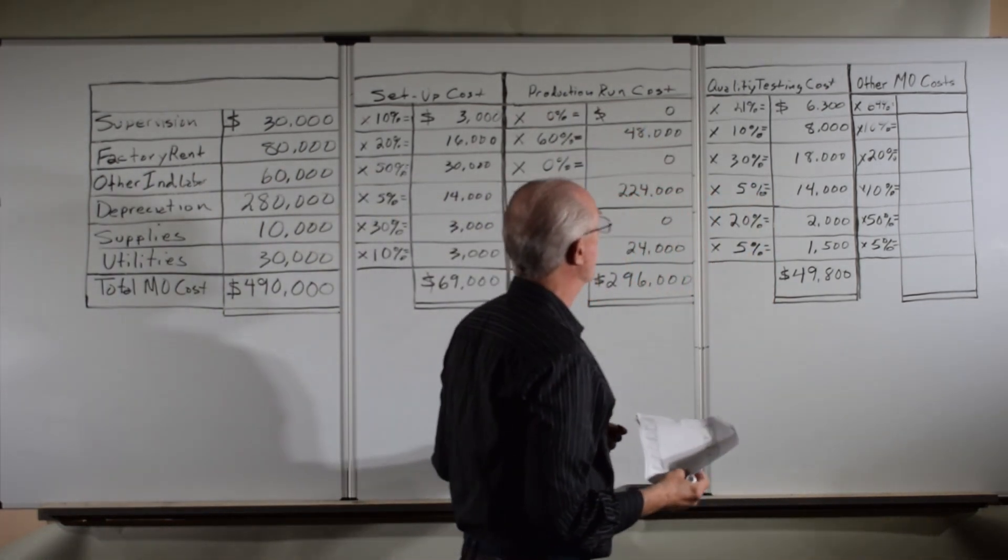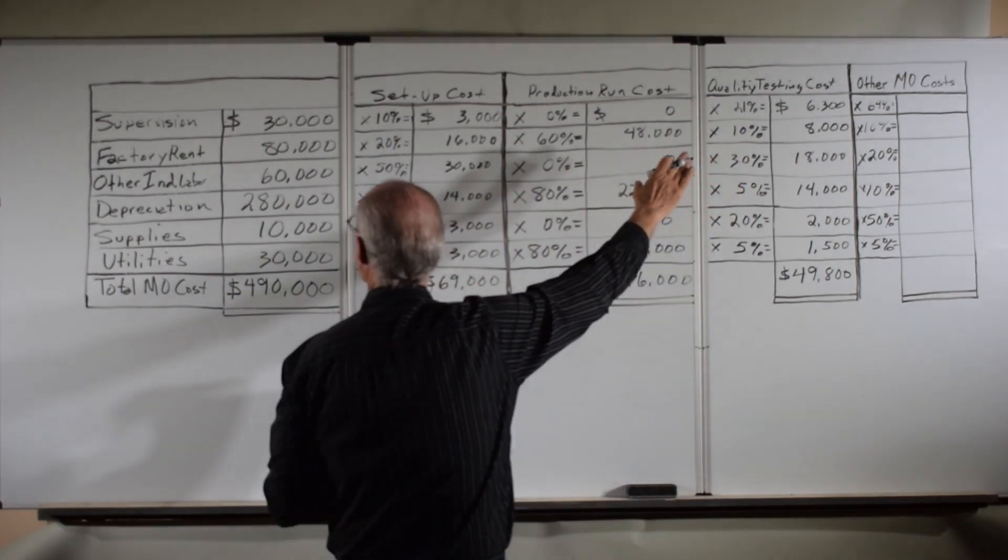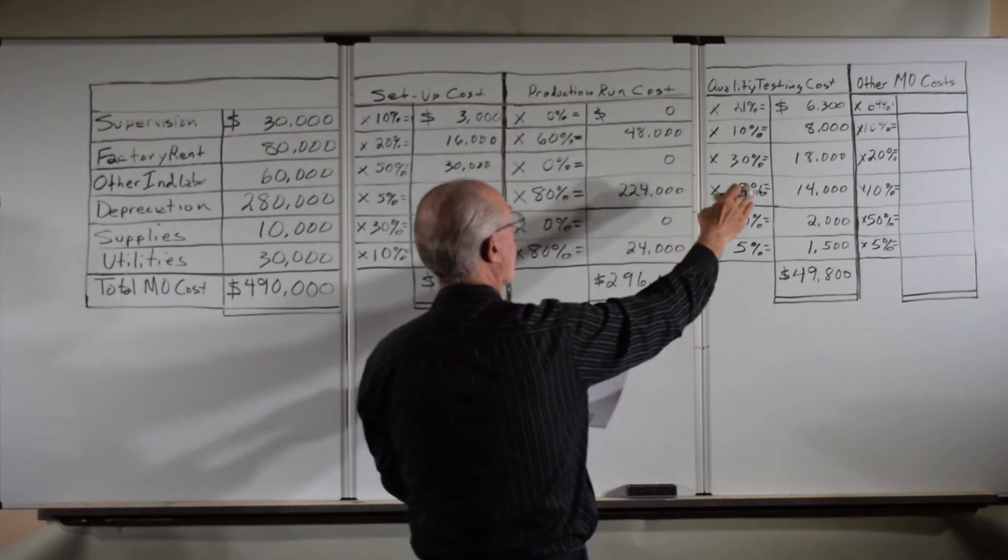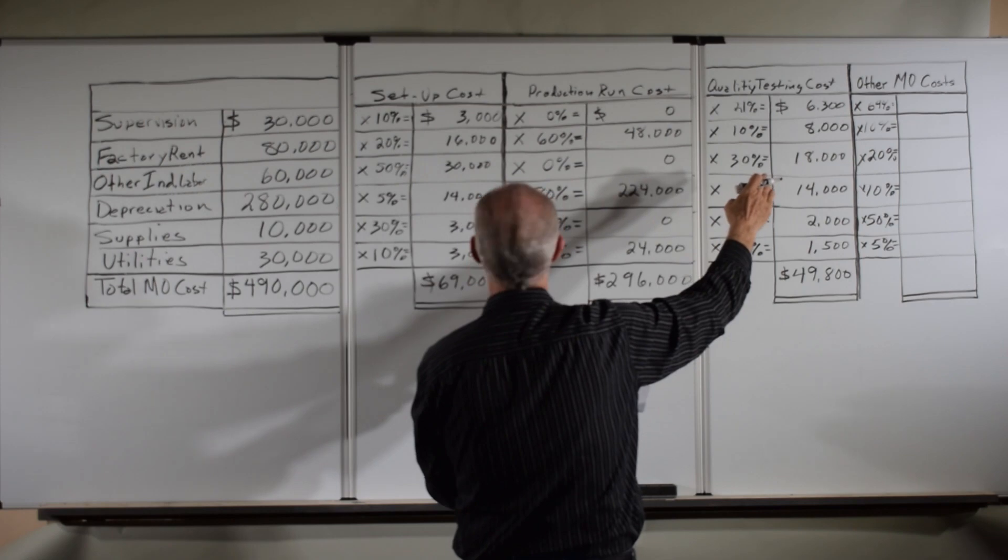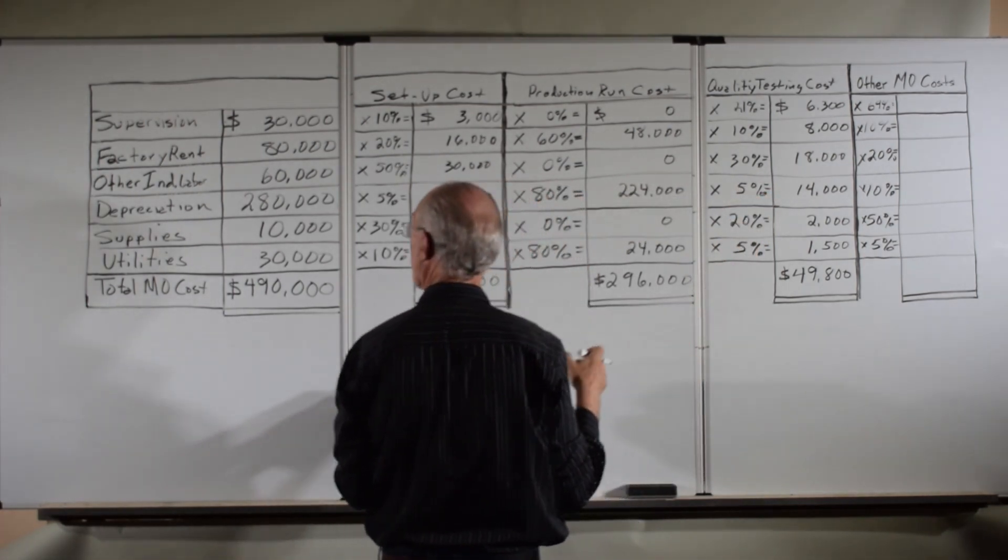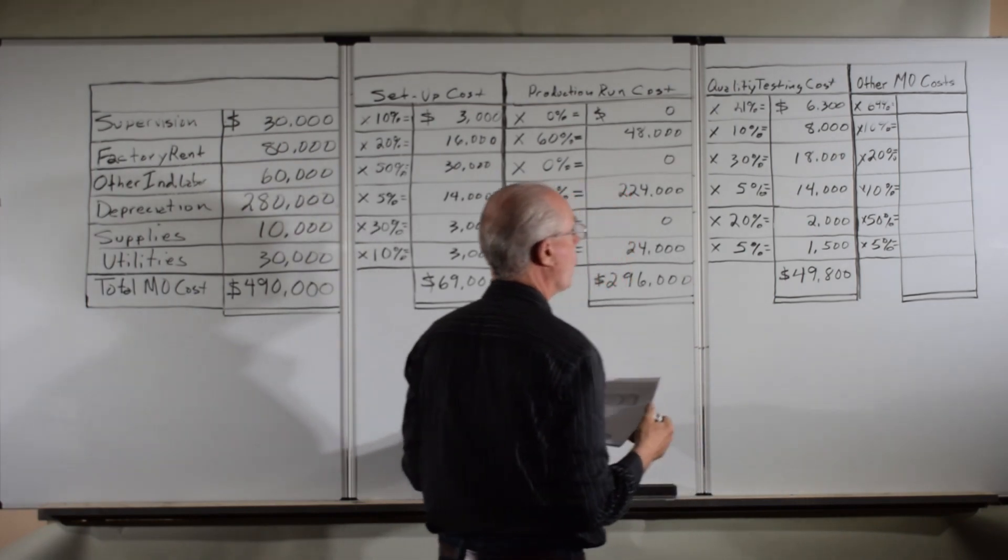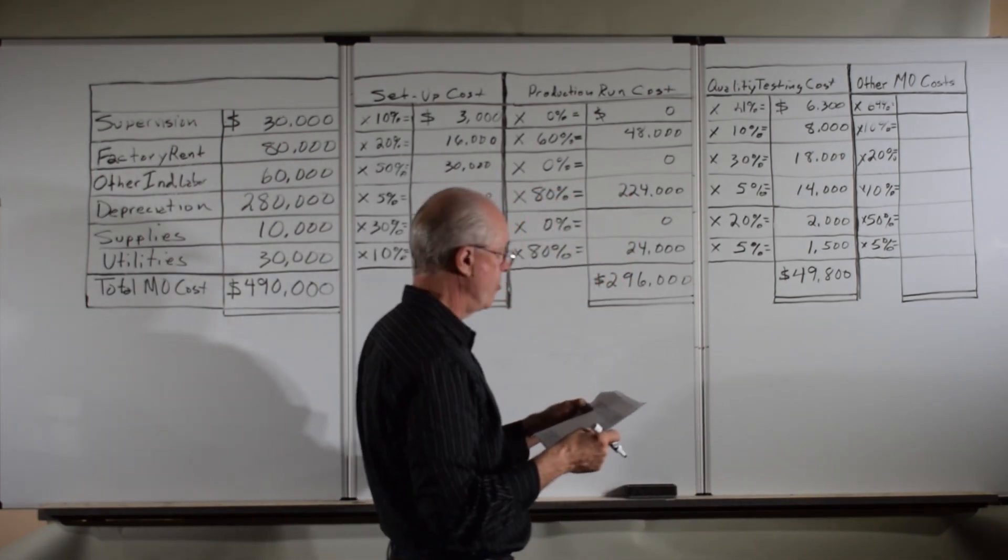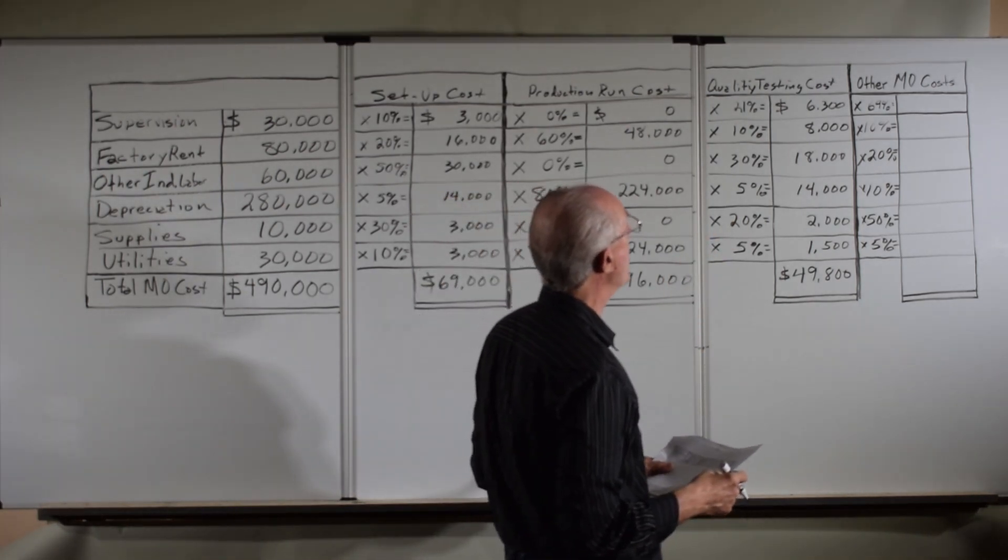We've got the quality testing done here. We've got 6,300 for supervision, $8,000 for factory rent, 18,000 for the other indirect labor, 14,000 for depreciation, 2,000 for supplies, and $1,500 for utilities.